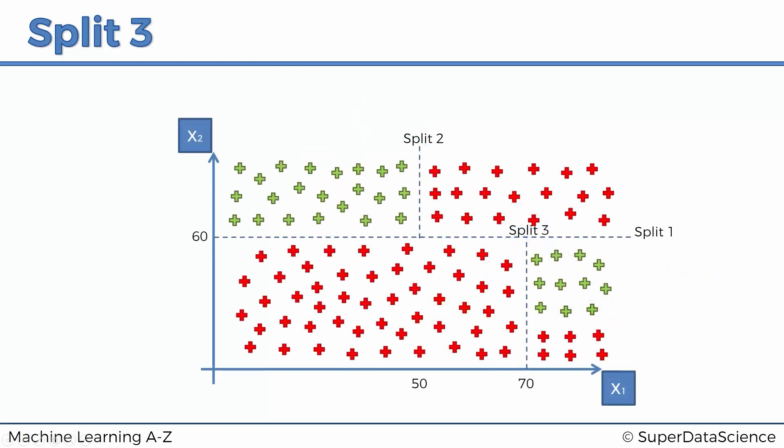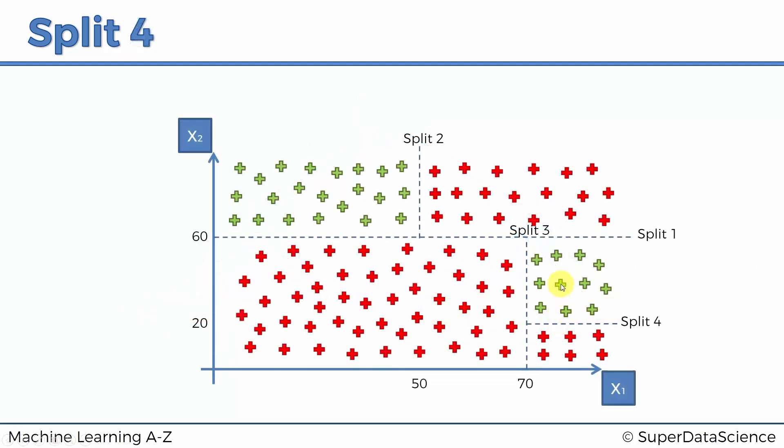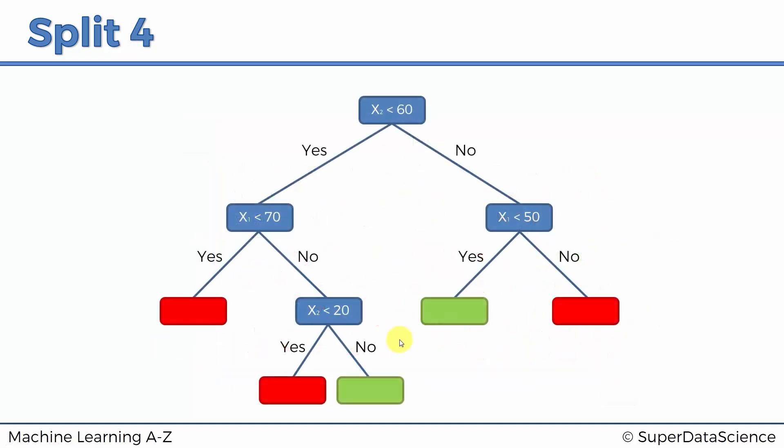Now let's deal with the remainder. We've got split three happening at 70. If you're below 70, you're obviously going to be red. Otherwise, we need to do another split. Split four: if it's above 20, then it's green. If it's below 20, then it's red.